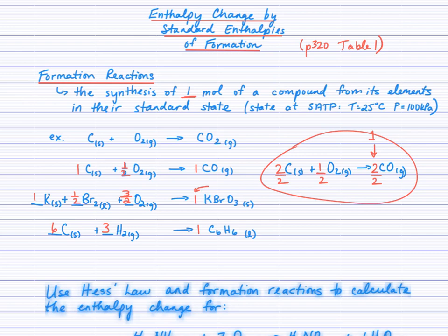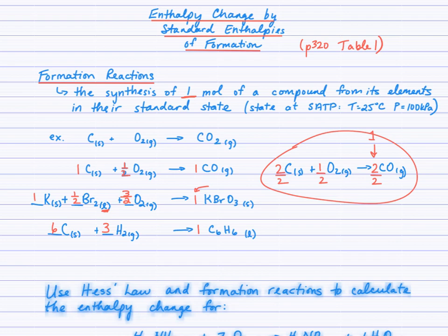For benzene, we have 6 carbon solid and 3 H₂ gas. Notice the states: all metals except mercury are solids. Among non-metals, bromine is the one liquid — Br₂ is a liquid — iodine is solid, and fluorine and chlorine are gases. Nitrogen, oxygen, and hydrogen are also gases as elements. Everything else is a solid. Know the liquids and the gases; everything else is a solid.